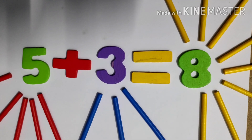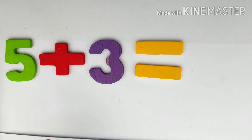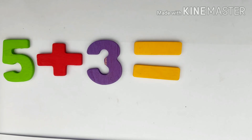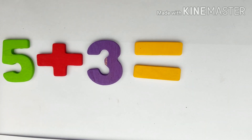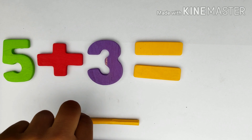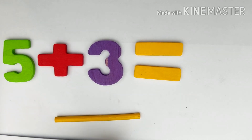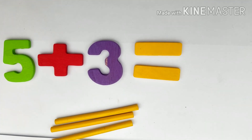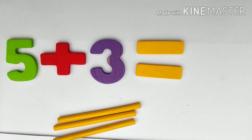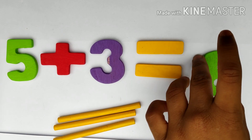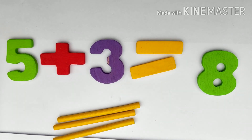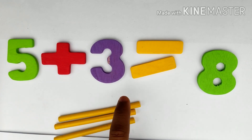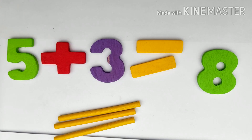Activity time. Five plus three equals to? Five in the mind. Look at this. One, two, three. After five: six, seven, eight. There you go. Five plus three equals to eight.